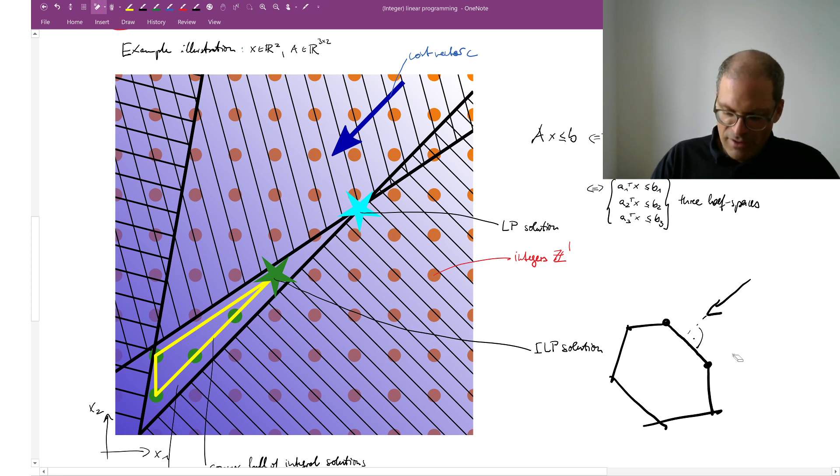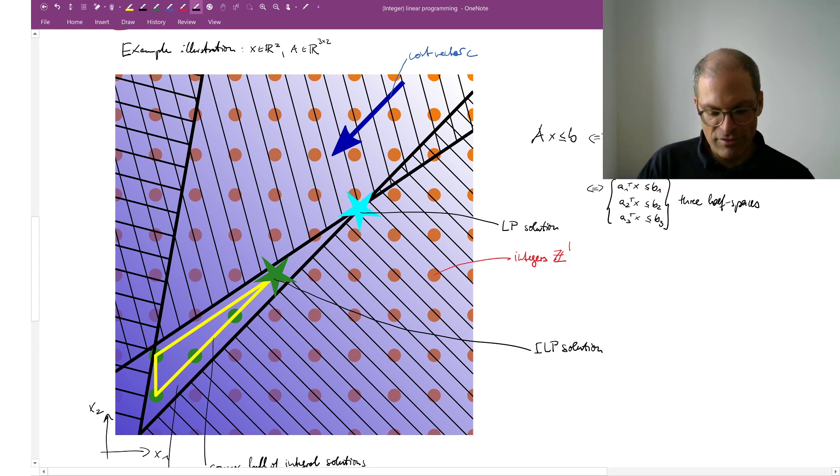In general, this is somewhat unlikely that one of these faces is exactly orthogonal to the cost vector. So a more typical case would be the cost vector is pointing here, and then I have one best solution. Depending on how this polytope is structured, I might have other solutions that are nearly as good, but usually except in degenerate cases there is a clear winner, there's a unique solution which in this particular example here is shown by the location of this turquoise star.